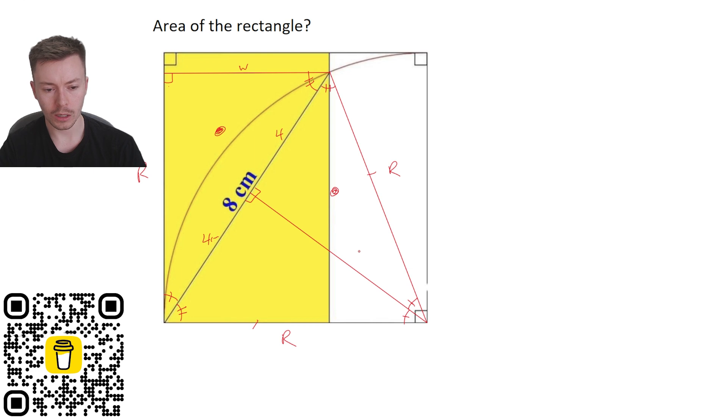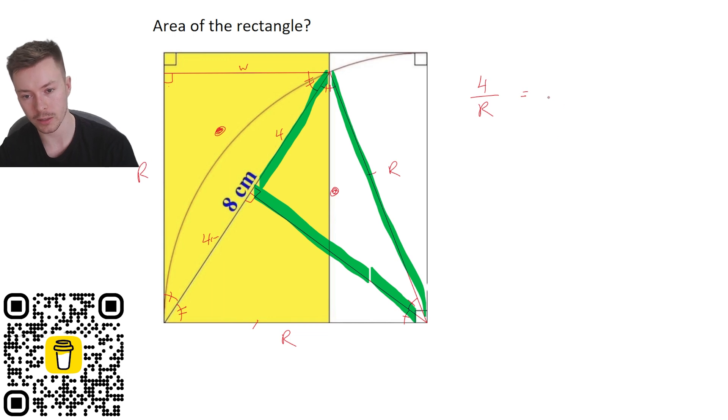Right, so we've got that if we're looking at this triangle here, and I'll try and highlight it for us, if we're looking at this one here, so that's got this smallest length as being four and a hypotenuse of r. Okay, so four over r has to be the same as, if we now look at this larger triangle, the hypotenuse would be on the bottom, so that's eight, and that would be over w, which is the width.